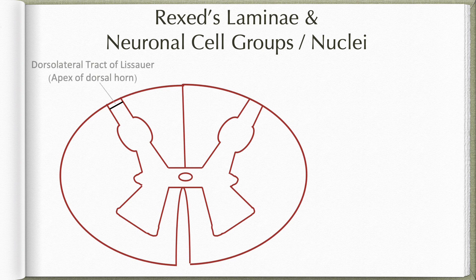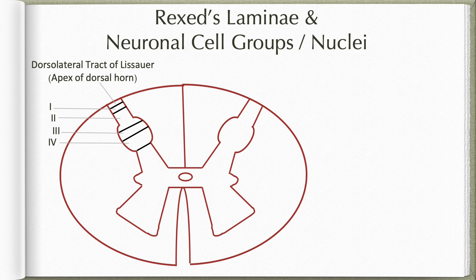The dorsal most part is occupied by the dorsolateral tract of Lissauer. Just inside that, laminae 1, 2, 3 and 4 occupy the head region of the dorsal horn. These receive cutaneous afferents and form the site of reflexes, as well as having cells which give rise to some ascending tracts. Lamina 1 has a reticular arrangement of cells and fibers. Lamina 2 is densely packed with small cells and receives most of the unmyelinated fibers. Lamina 3 is made up of larger neurons and receives mostly myelinated fibers. Lamina 4 is a heterogeneous mix of different sized cells.